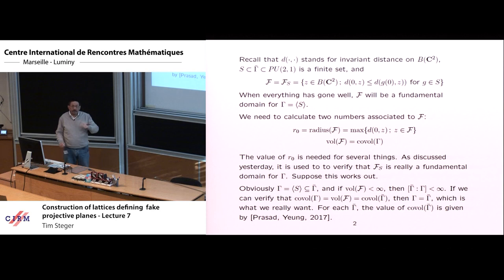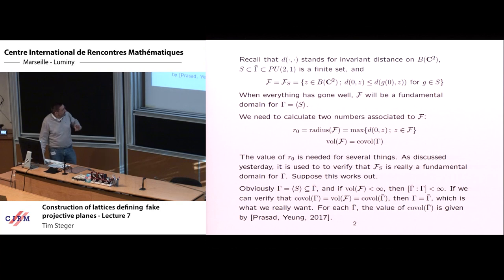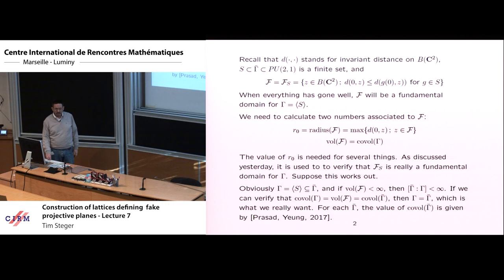The values for our desired group are known through more theoretical calculations — in fact, this is what comes out of Prasad's volume formula. On the other hand, to get the co-volume of gamma, we have to measure how big this fundamental domain is, and that is not done with theoretical calculations. It's done by integrating the volume form numerically. So these are the two numerical calculations we need to do.